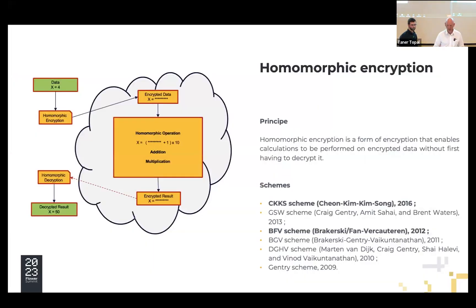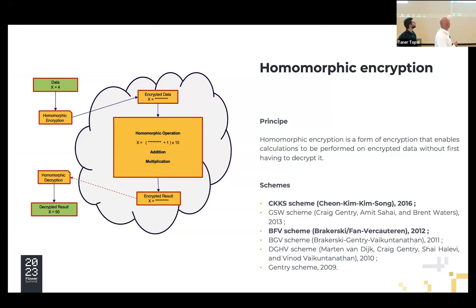The idea with homomorphic encryption is to encrypt the data on the client server, and on the central server with aggregation it is possible to perform operations — addition and multiplication. Thanks to this encryption, it's possible to do operations on the data without decrypting it. Now I am going to give the floor to Leandro to talk about the experimentation.